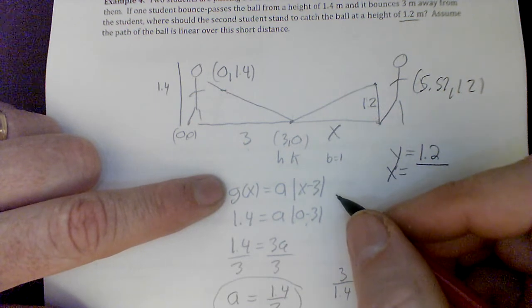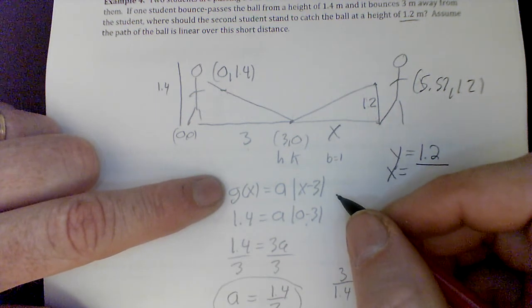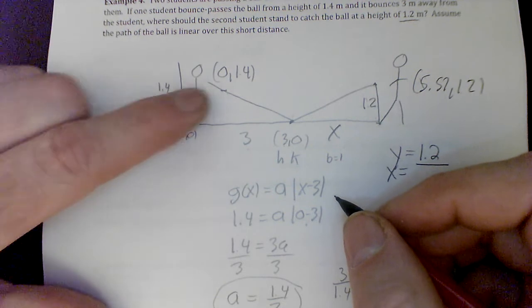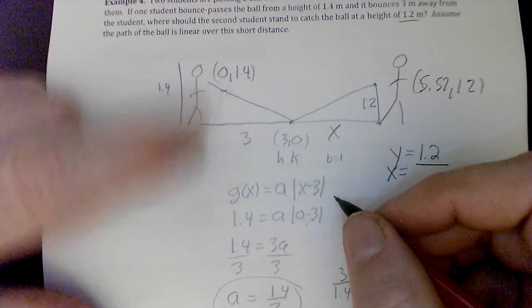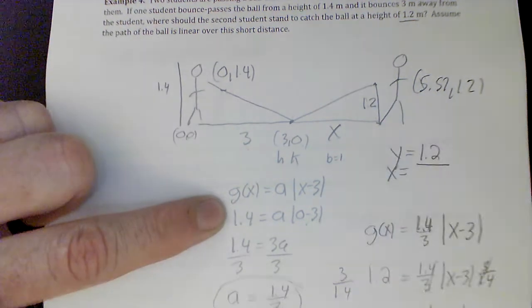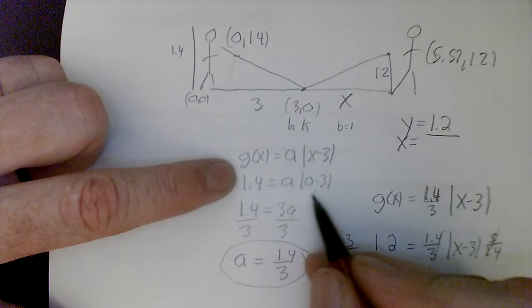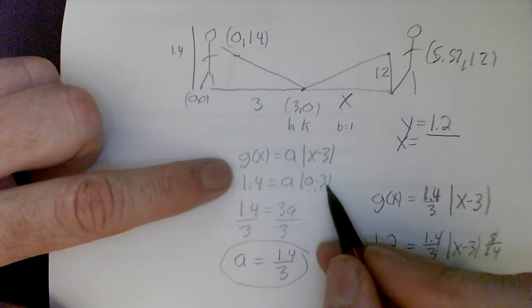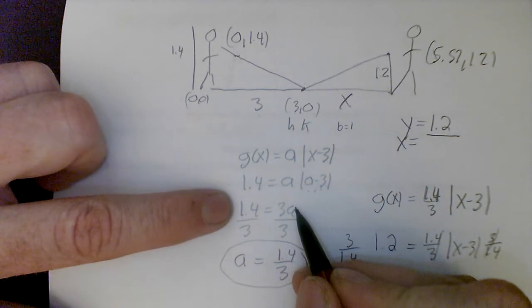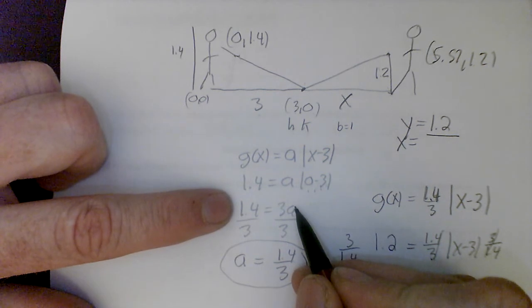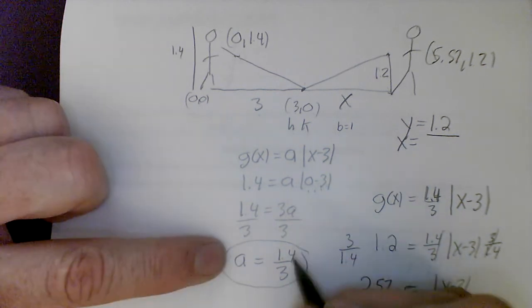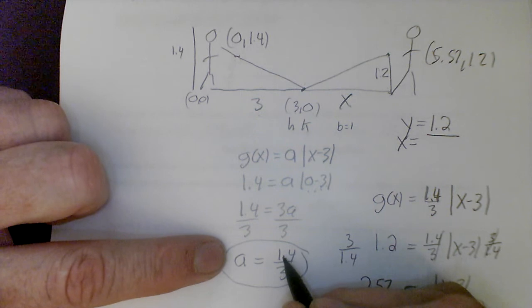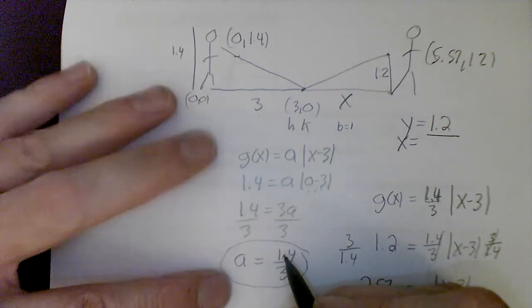And we plug in a known point. Well, in this situation, we have this point over here. We have 0 and 1.4 to solve this equation. So 1.4 is my output. 0 is my input. 0 minus 3, negative 3. But that absolute value makes it a positive 3. Once I get here dividing both sides by 3, I get an a value. And I left it like this because it was a pretty ugly decimal.